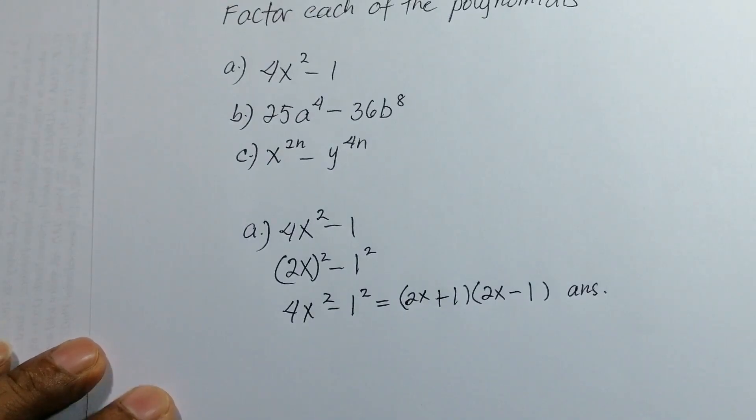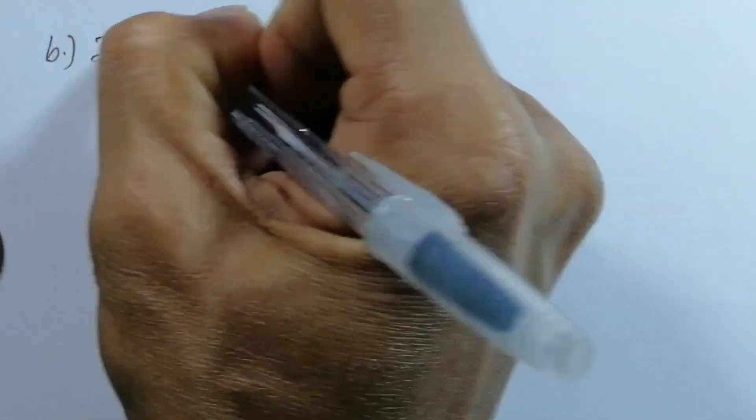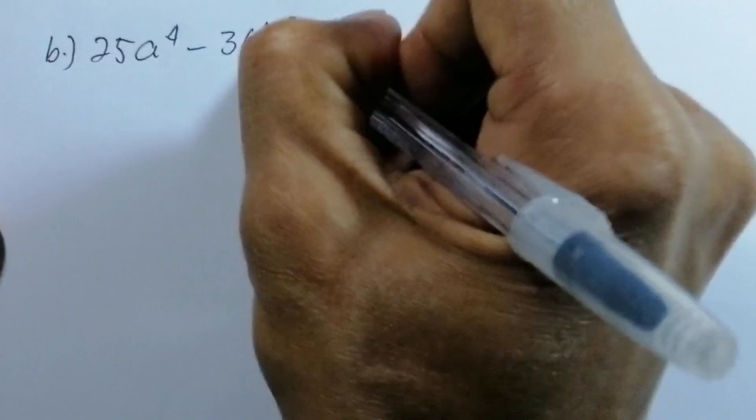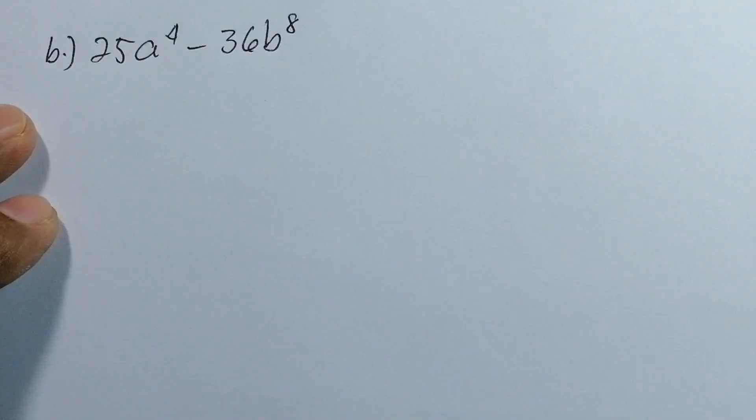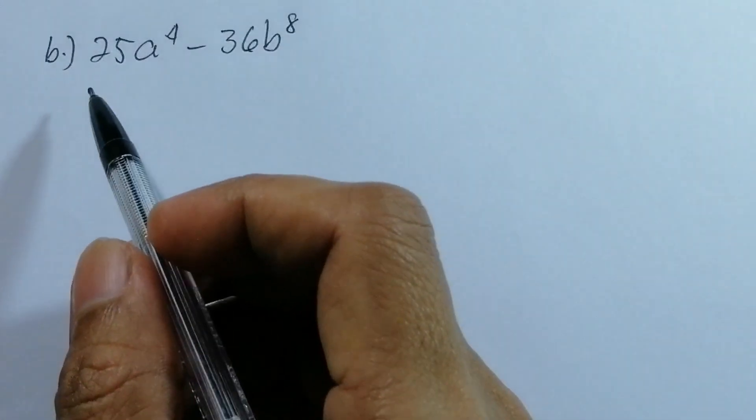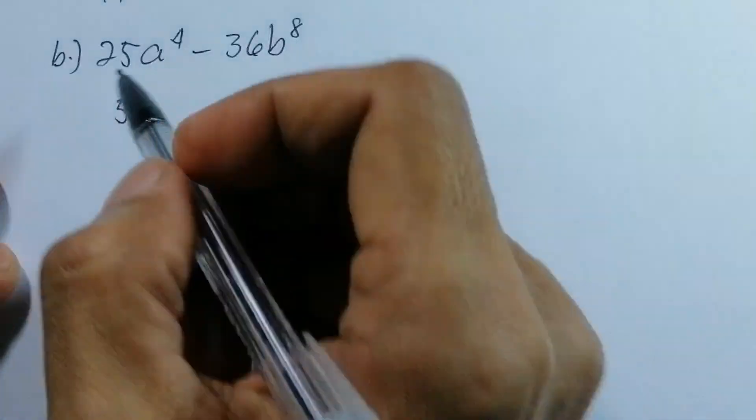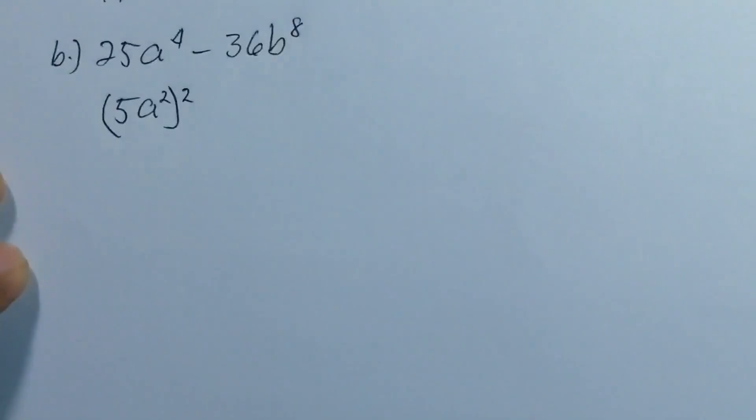Letter B: we have 25a⁴ - 36b⁸. Again, we get the square root of 25, which is 5a², and write it as (5a²)².